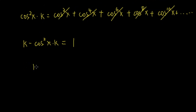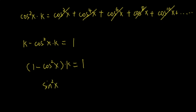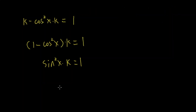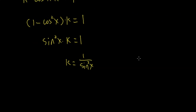Now k is the common factor, so let's factor k out: 1 minus cosine squared x, times k, is equal to 1. And 1 minus cosine squared x is sine squared x, so sine squared x times k is equal to 1. Dividing both sides by sine squared x, k is equal to 1 over sine squared x, which is also equal to cosecant squared x.